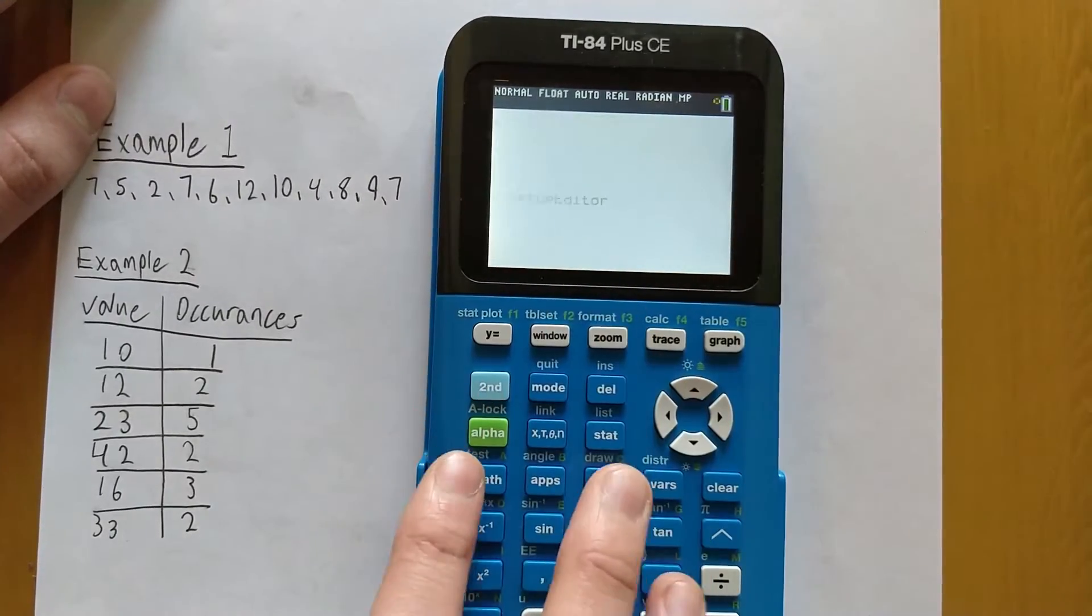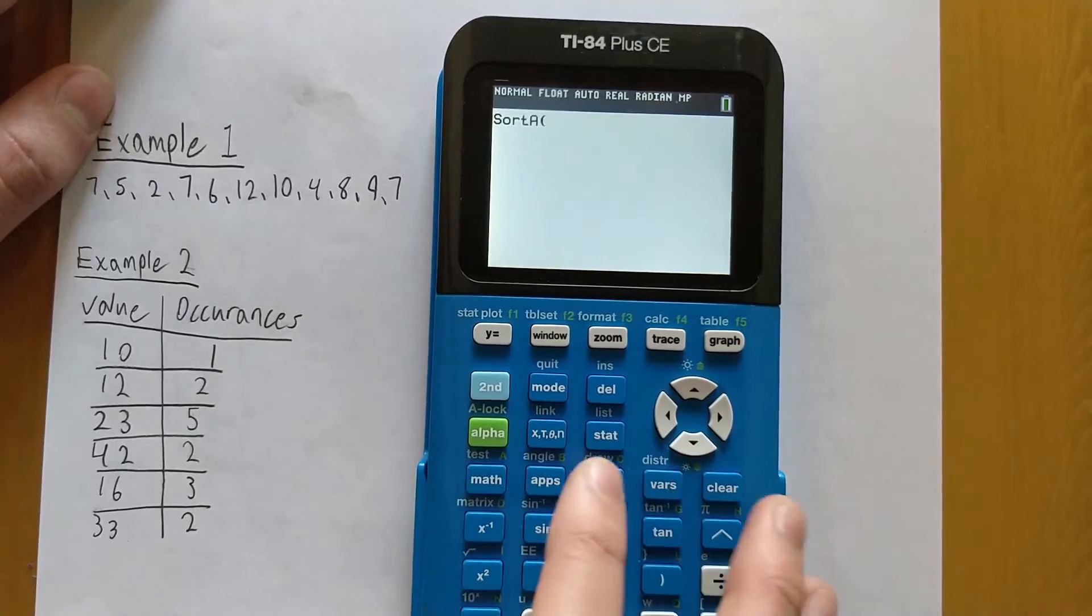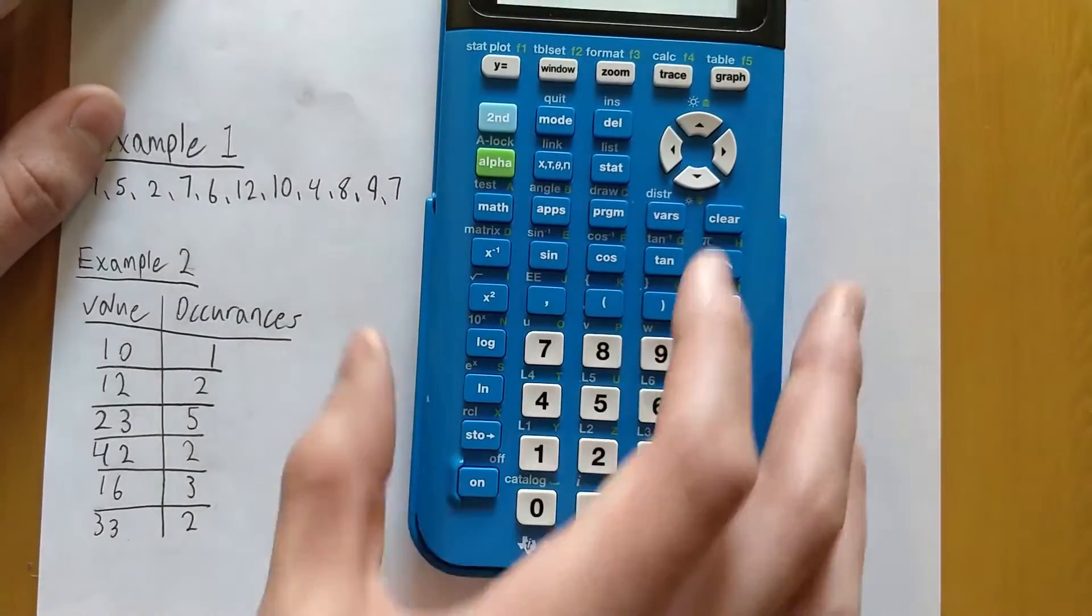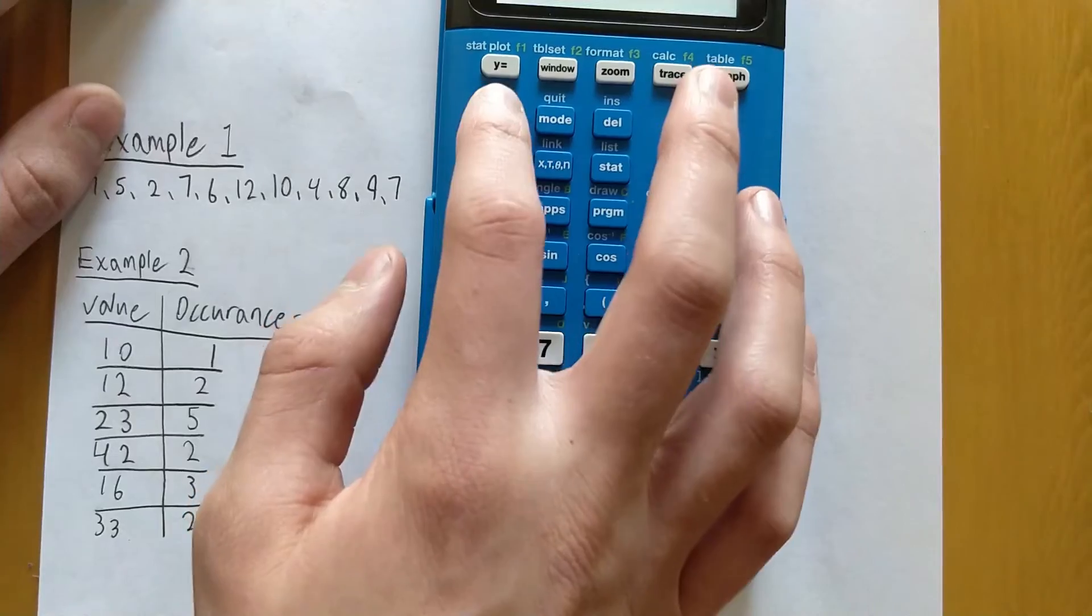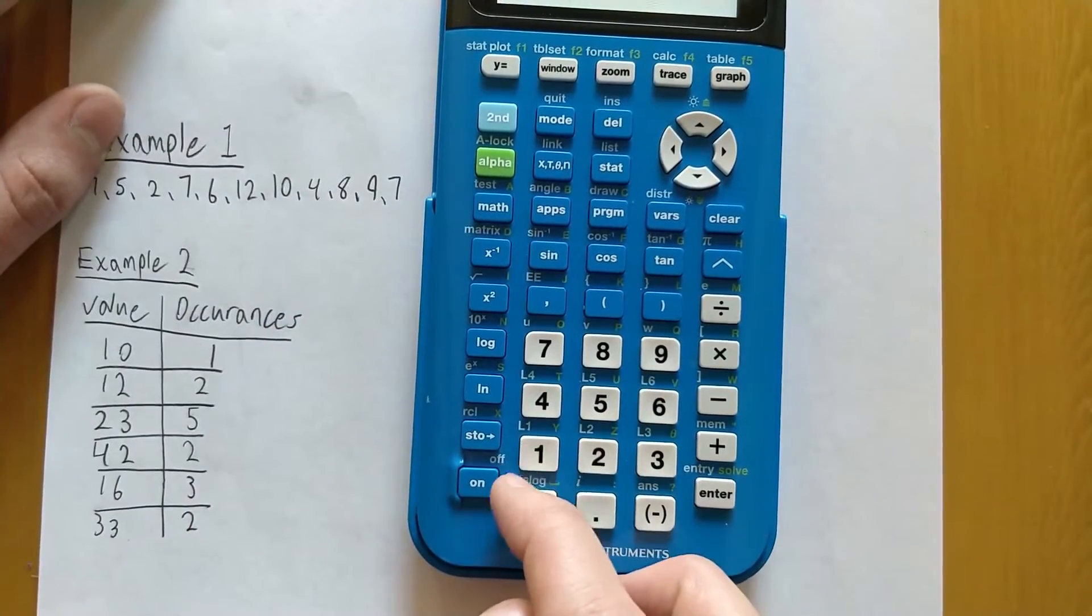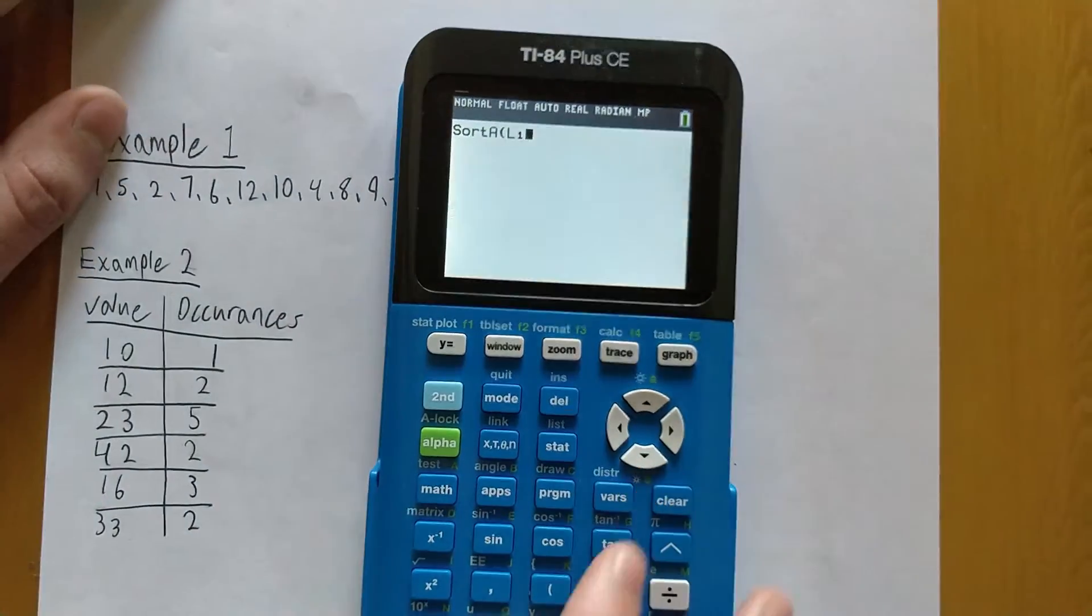So if we go to Sort Ascending, press Enter, and then just type in the list name that we want to sort in ascending order. I've typed my values into L1, so I'm going to go to Second and then L1, which is 1, and then just hit Enter.